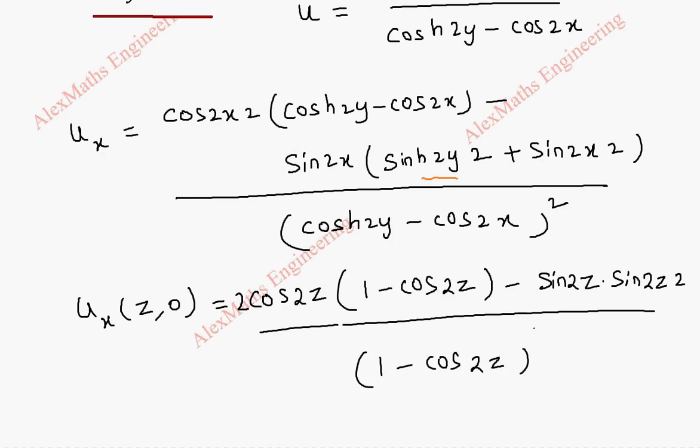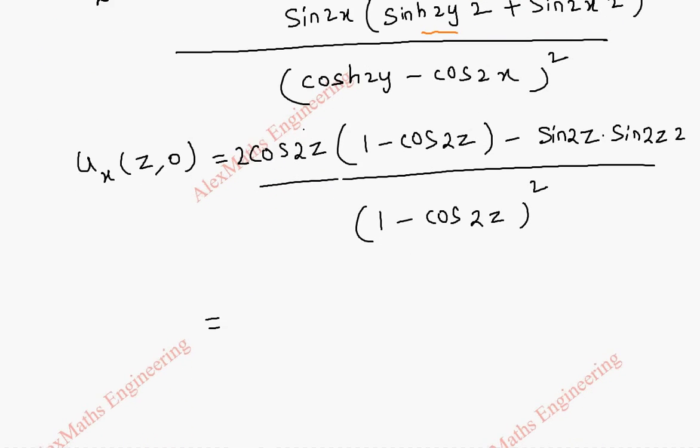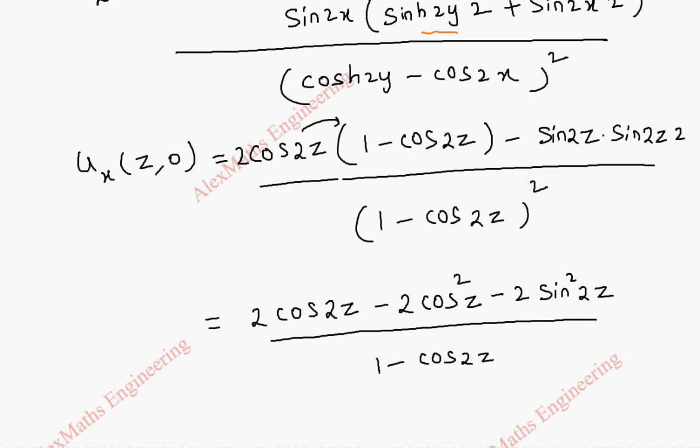Then whole division we have this is 1 and this is cos 2z. So I have substituted directly wherever x is there as z and y is there as 1. So now finally when we multiply this inside it is 2 cos 2z minus 2 cos square 2z.